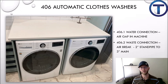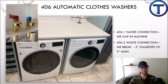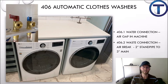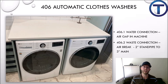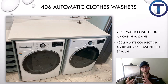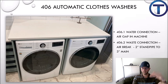406 is about automatic clothes washers. 406.1 covers the water connection and 406.2 covers the waste connection — those are the two main plumbing connections to any washing machine. When we hook up the water to a washing machine, that washing machine has to have an air gap built in. The air gap protects our potable water against backflow from drainage. This air gap is actually built into the machine where the water flows into the barrel that washes the clothes. That's not something you have to install, but it is a code requirement.